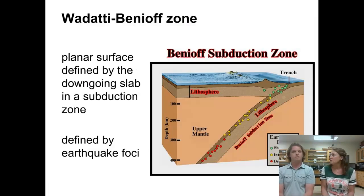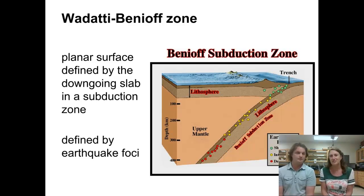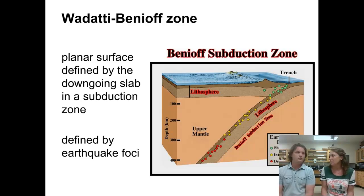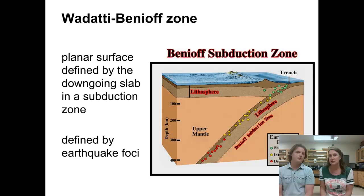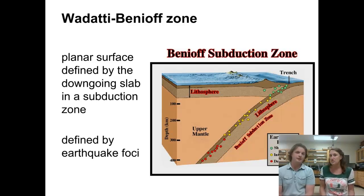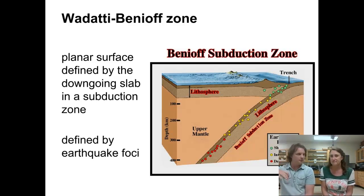We've got a definition here called the Wadati-Benioff Zone — usually geologists just call it the Benioff Zone. The Benioff Zone is defined by that down-going oceanic plate at a convergent plate boundary, whether it's ocean-to-ocean or ocean-to-continent. The location of earthquakes is defined along the top of that down-going plate, and that strip across the top is called the Benioff Zone. Whether the earthquakes are shallow, intermediate, or deep, it's all called the Benioff Zone — it's not occurring in the middle of the plate or deeper below that top part; it's right at that border.